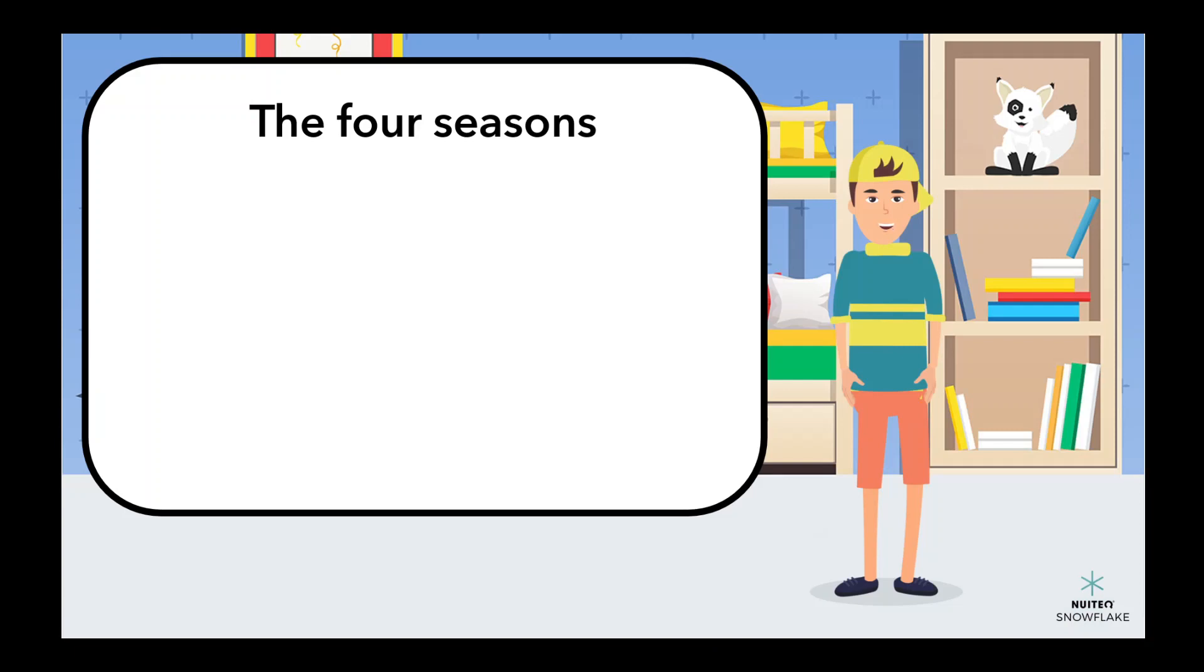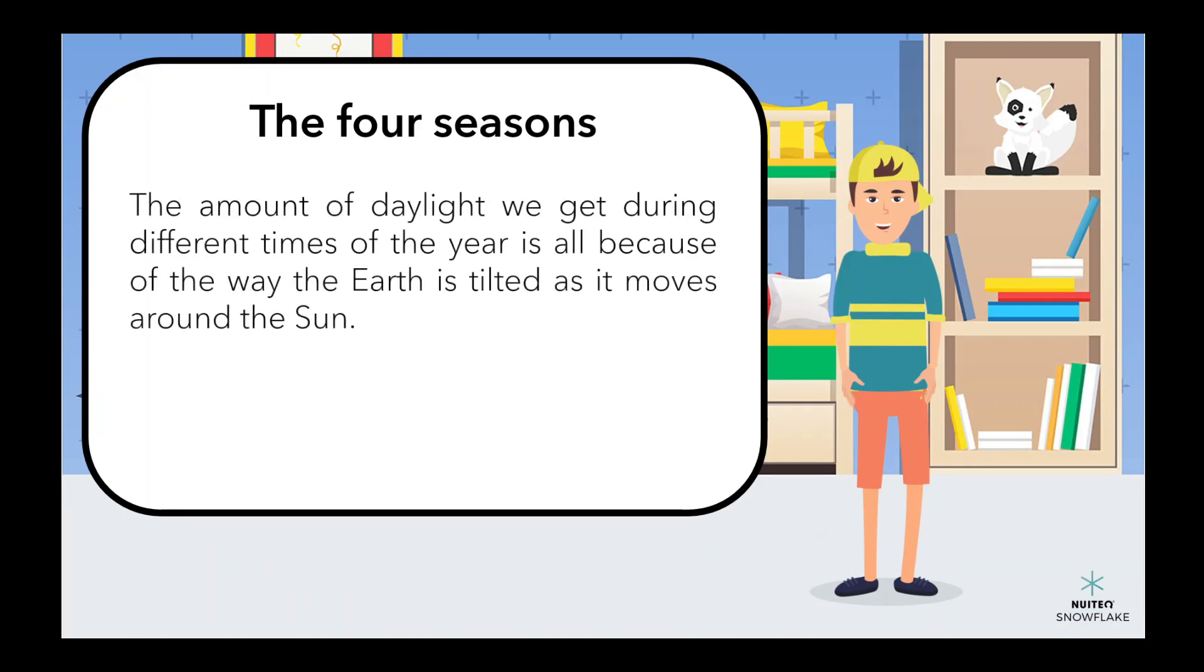So there you have it. The amount of daylight we get during different times of the year is all because of the way the earth is tilted as it moves around the sun. Spring and summer have longer days, while fall and winter have shorter days. Isn't it amazing how the seasons work? What's your favorite season?